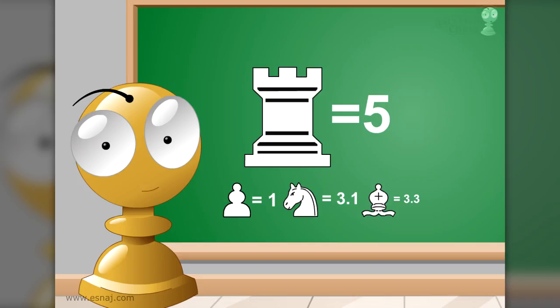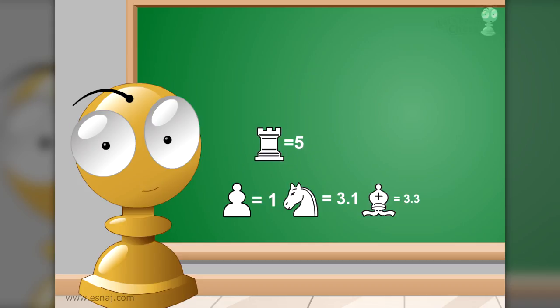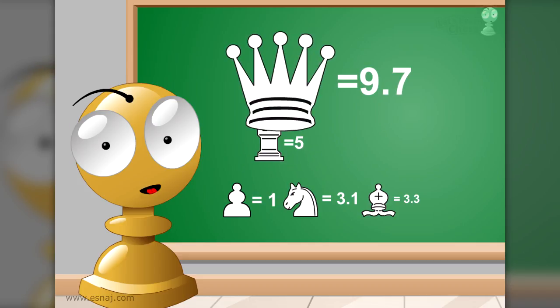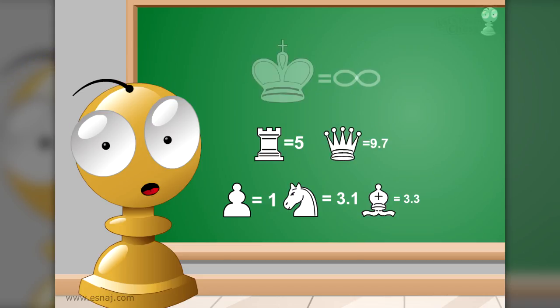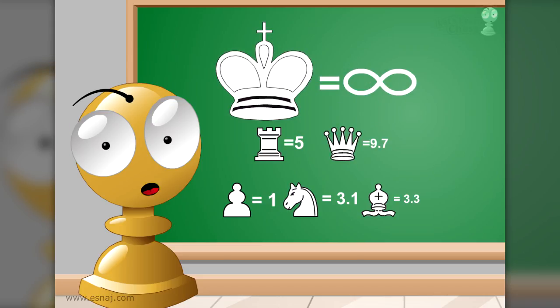The rook is worth 5 points. The queen is worth 9.7. And the king is considered the most important chess piece. It is priceless.